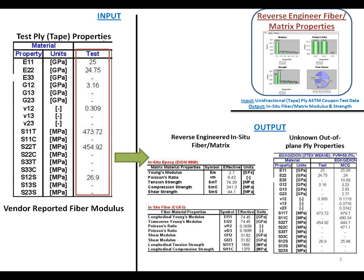The first thing I will discuss is the reverse engineering of fiber and matrix properties, as you can see on the upper right-hand side. To start this process, as input to the code you need minimum in-plane ply properties obtained from unidirectional tape ASTM standard coupon tests. You also need the vendor-reported fiber modulus.